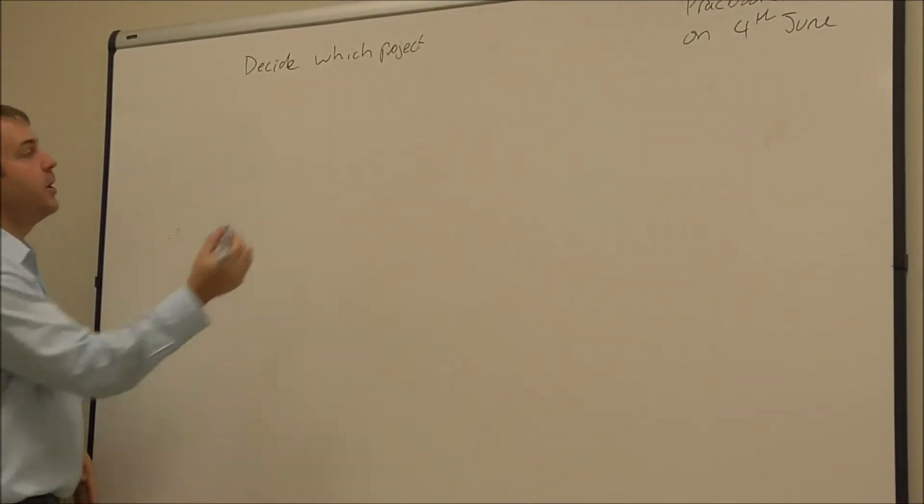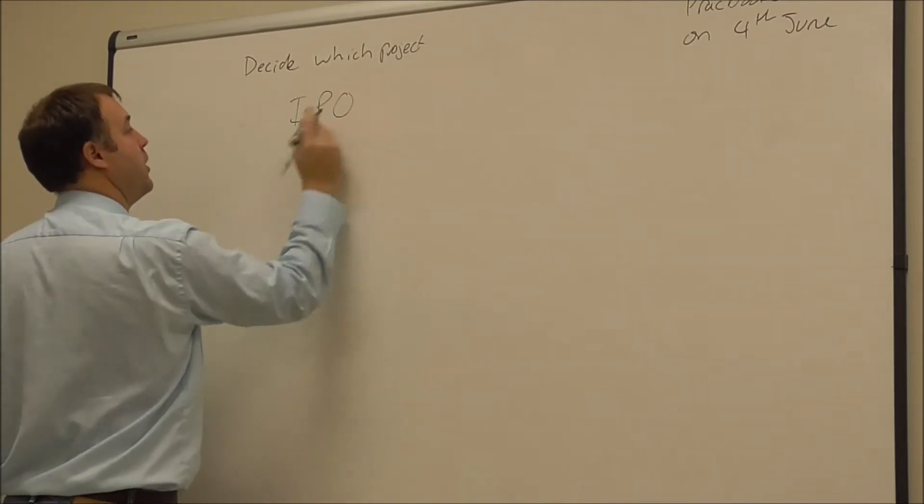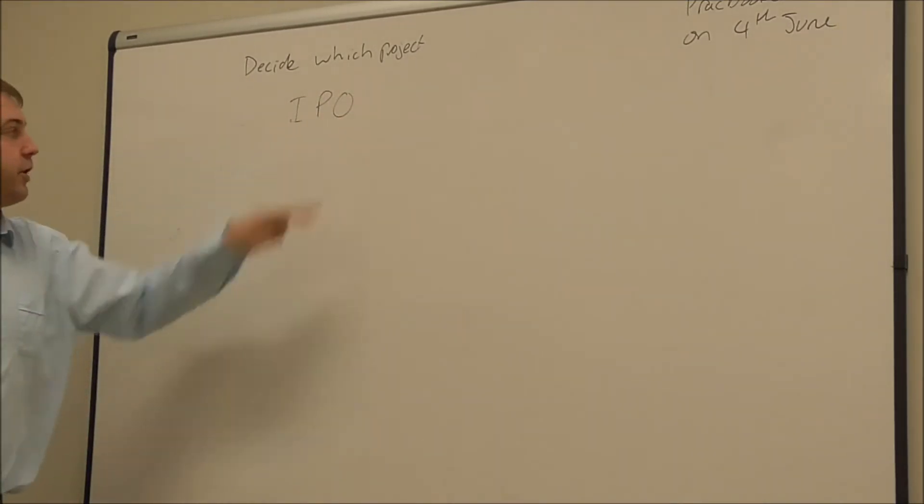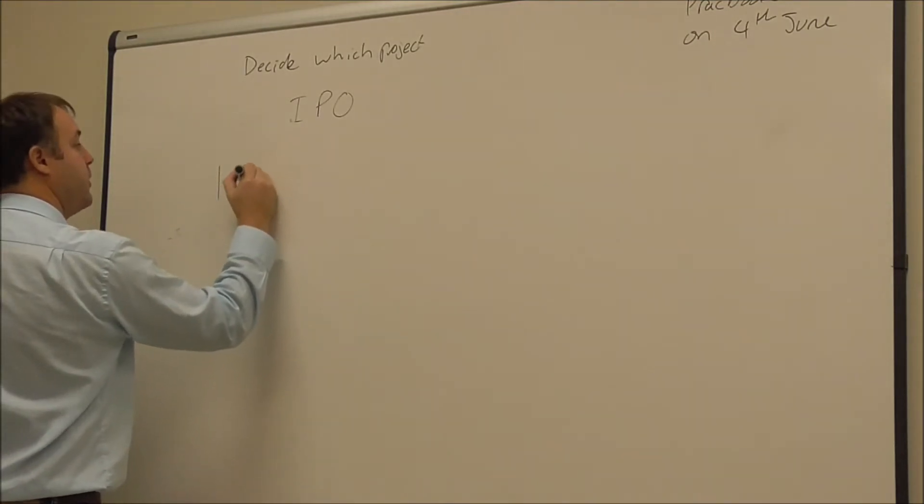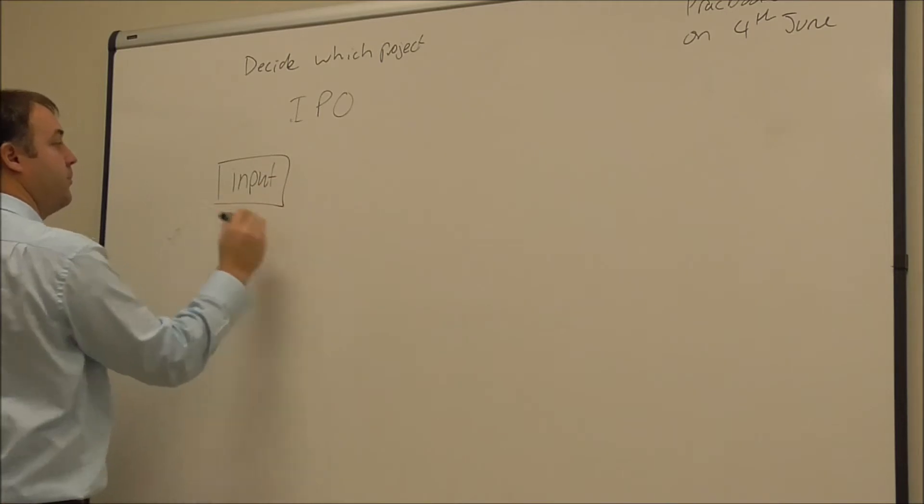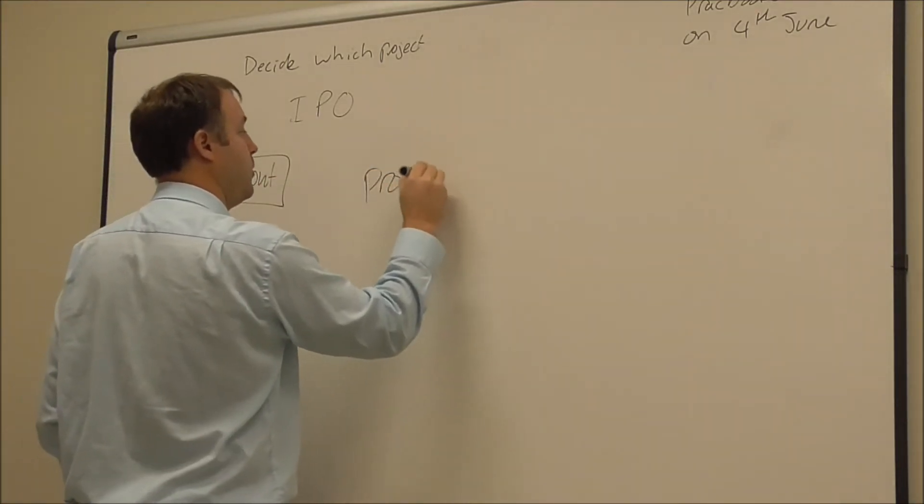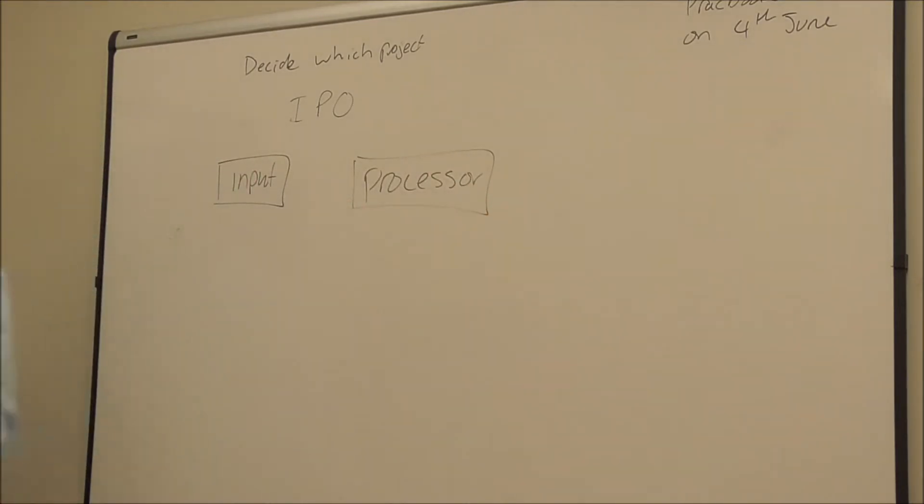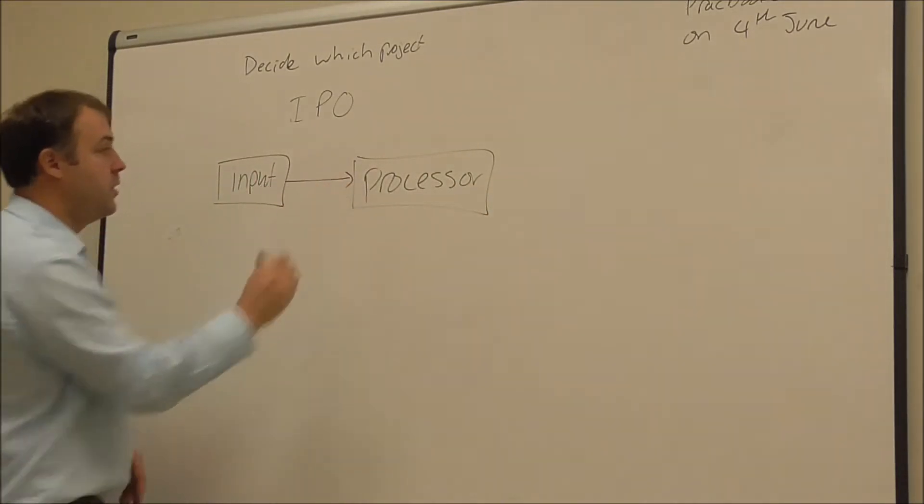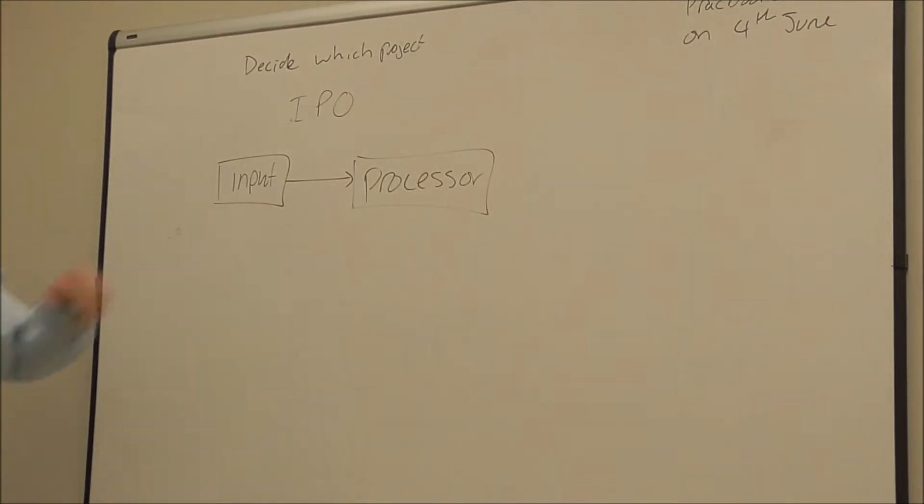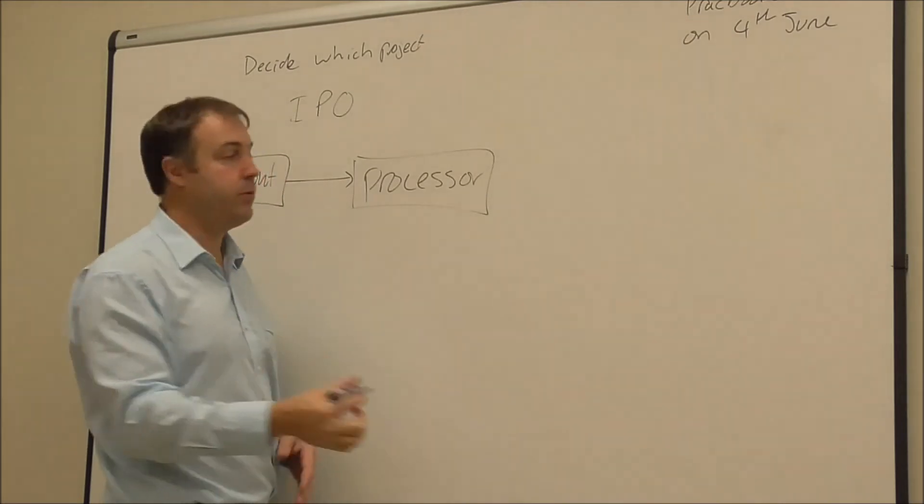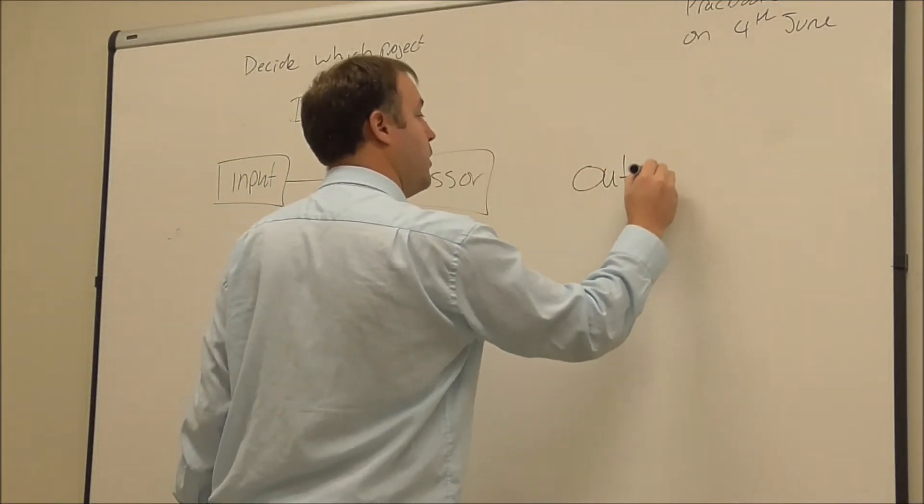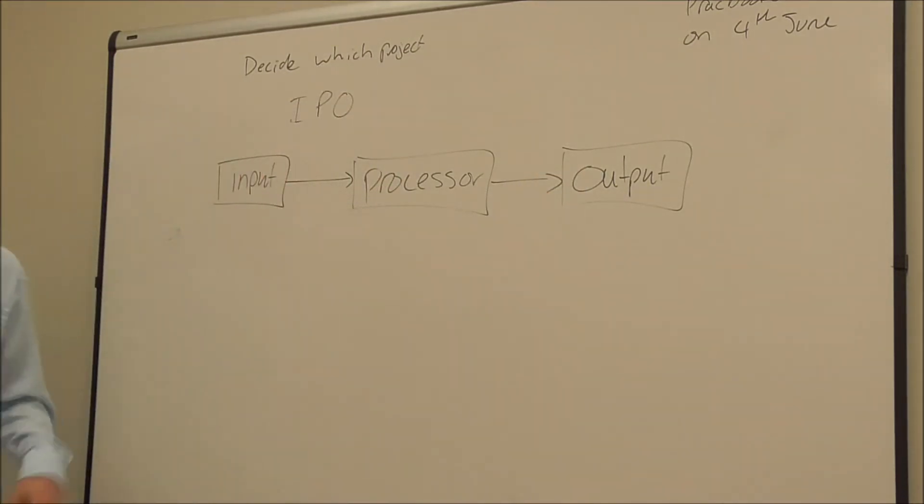So I'll show you a generalized function block diagram to begin with. They're called IPO function block diagrams. IPO because it's an input, a processor and an output. So your input produces a signal that goes to your processor. The processor does something with that signal to produce your output. This is the most basic IPO diagram, a generalized one. So I always start with my inputs and outputs first because they're the things that you know already.